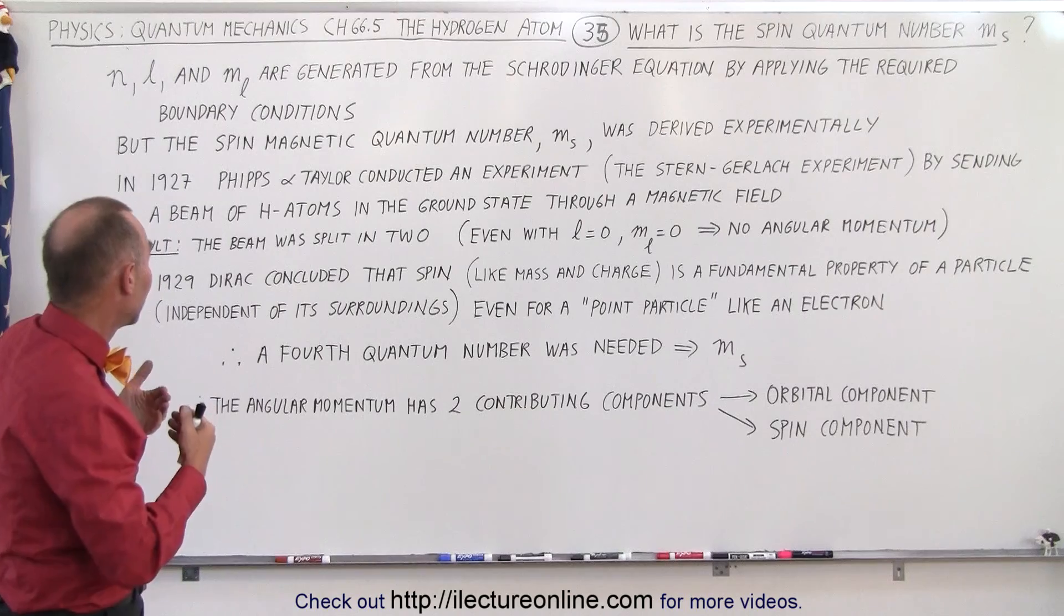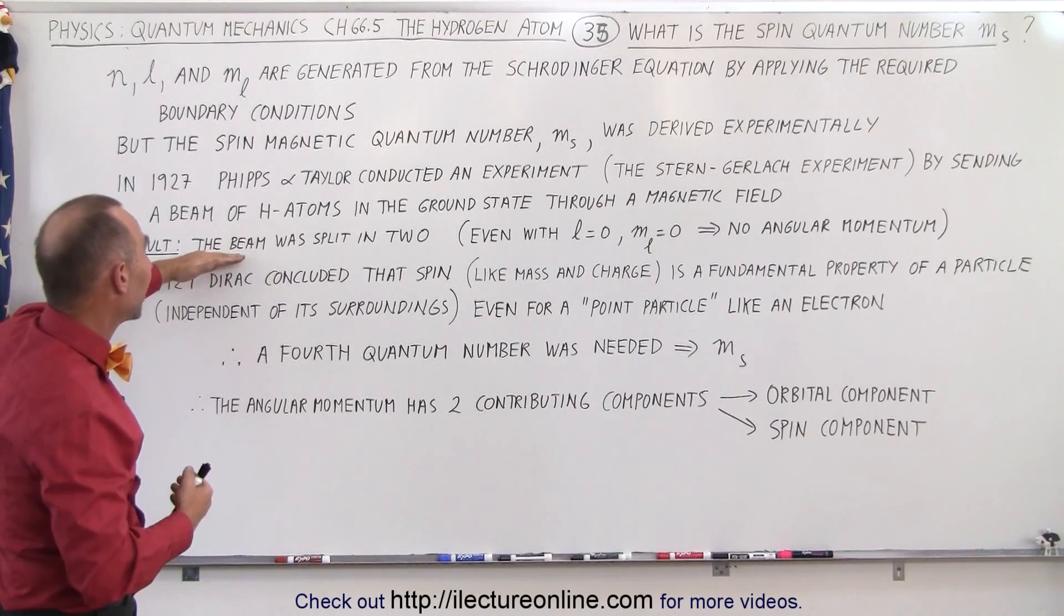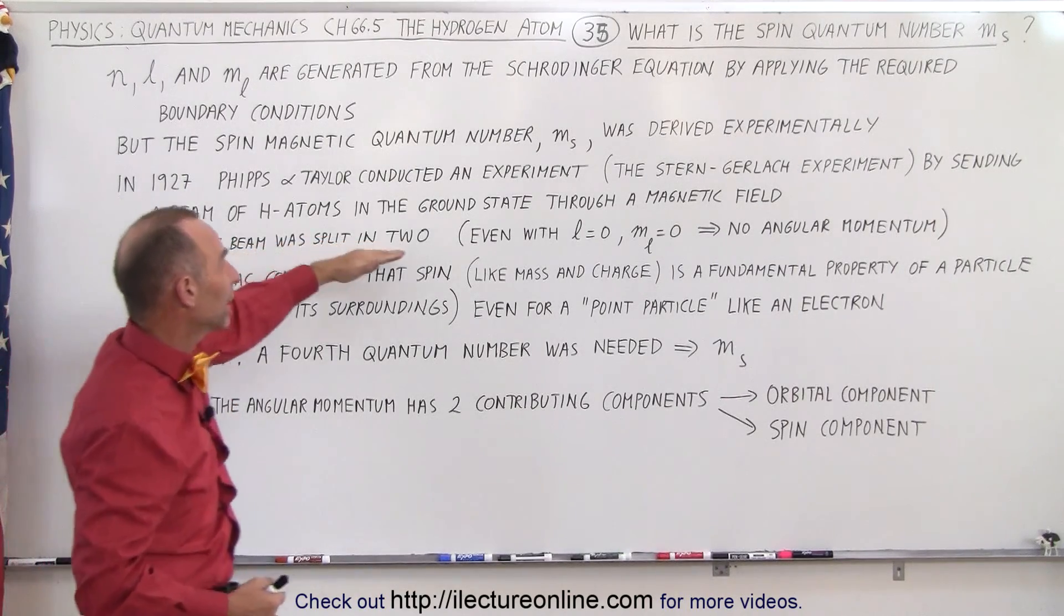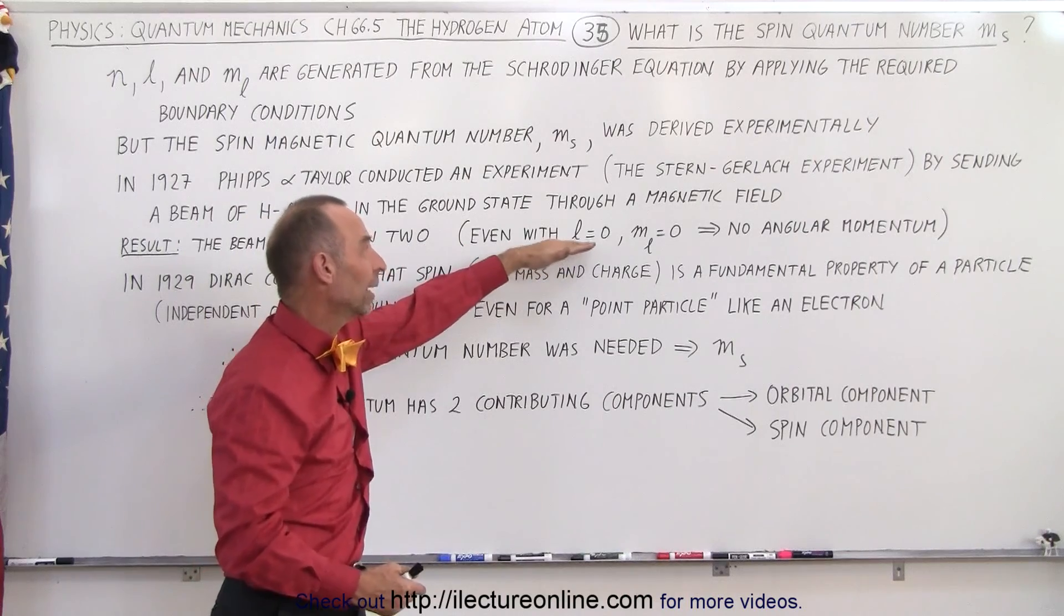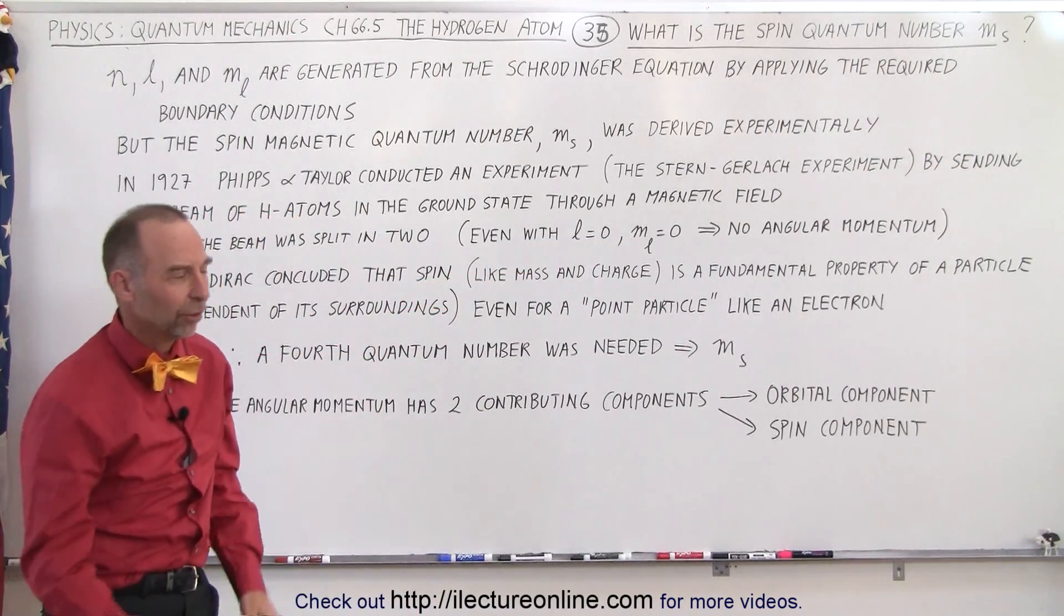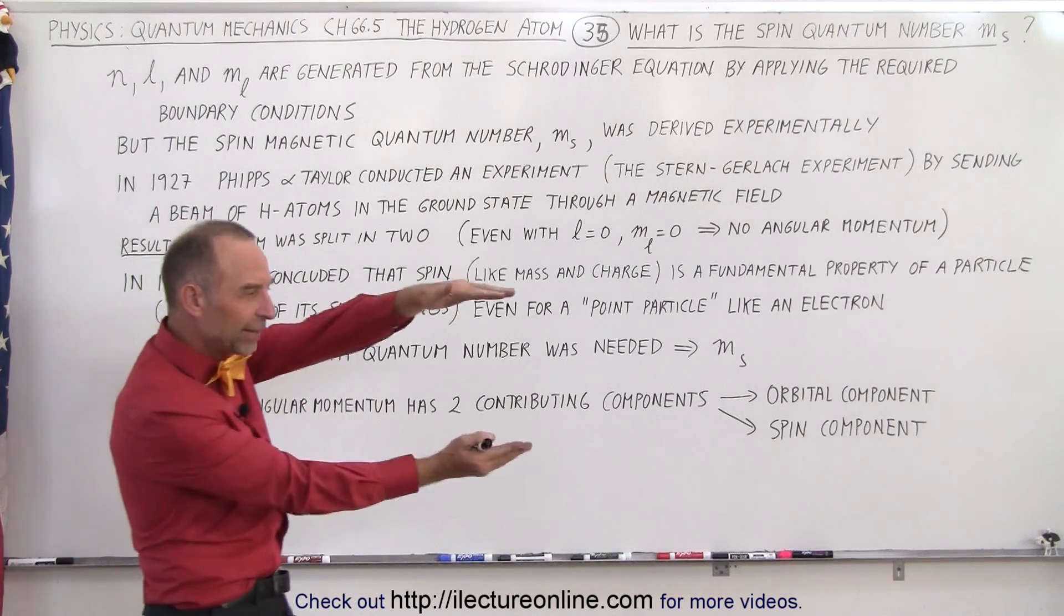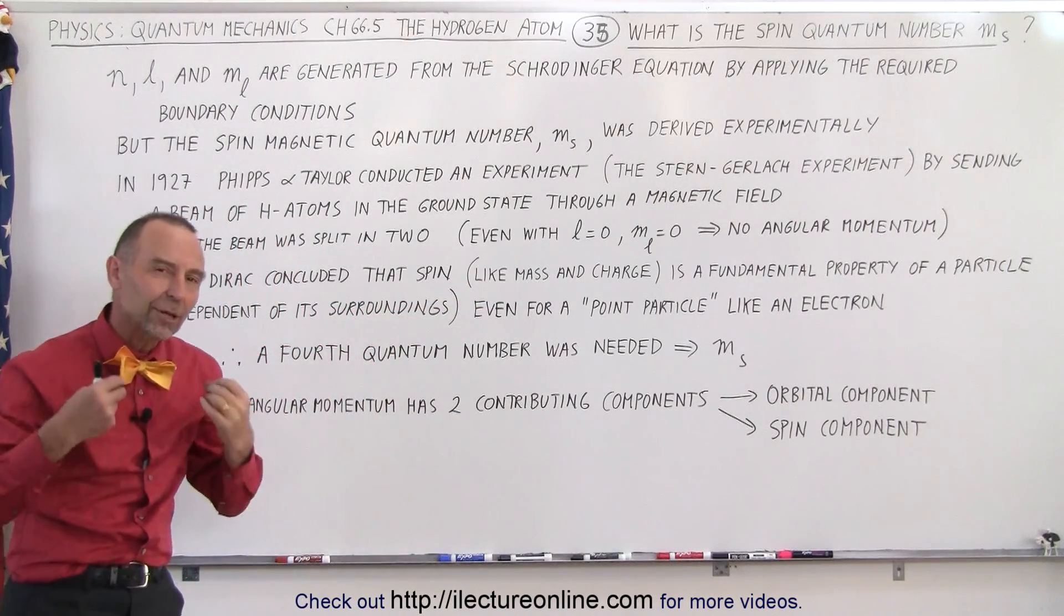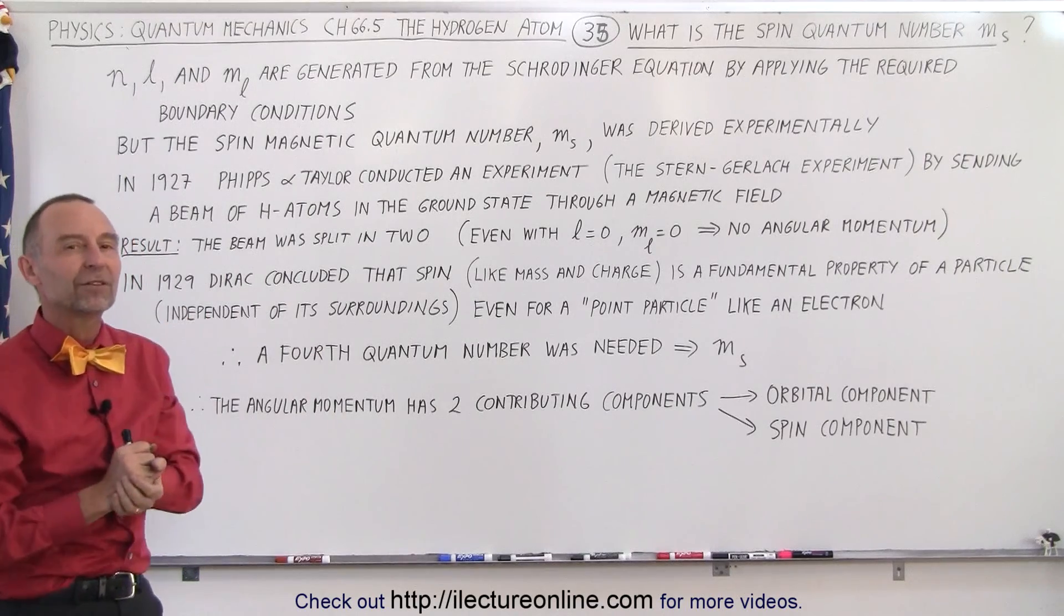But to their surprise, they were affected by the magnetic field. The beam was split into two. Even though, as we mentioned, L was equal to zero and M sub L was equal to zero. So why was the beam split into two when you sent hydrogen atoms in the ground state through a magnetic field?